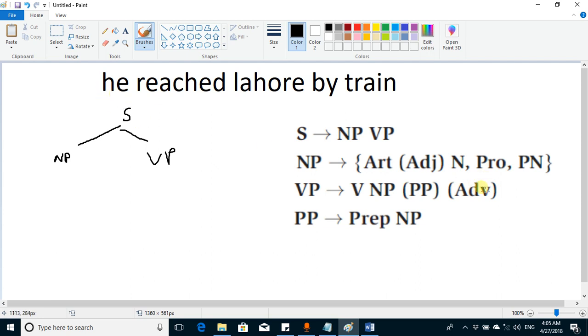So here this prepositional phrase is optional, this adverb phrase is optional. So here noun phrase may be one of these options. 'He' is a pronoun, so it lies here. So we can say noun phrase is pronoun, so I write here 'he.' So 'he' was properly resolved here.